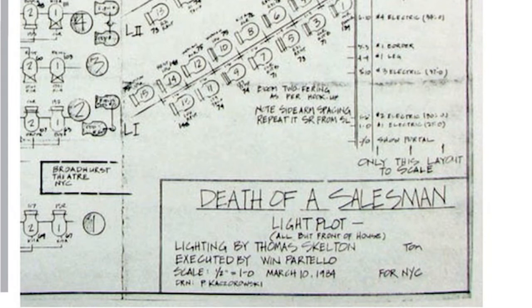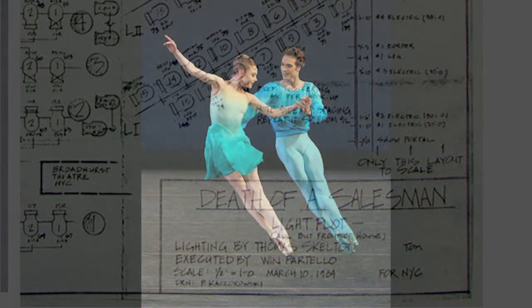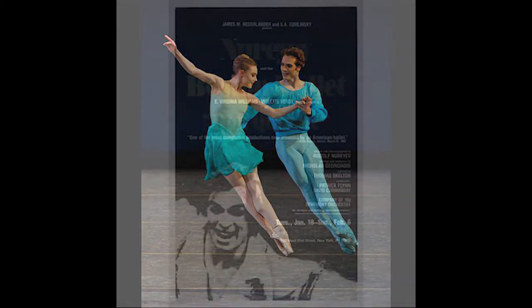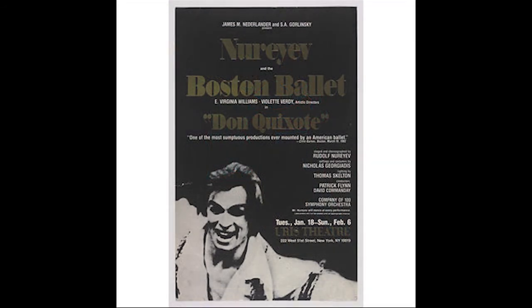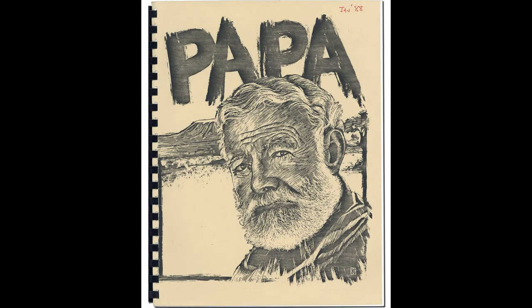Su estilo procuraba resaltar la textura de los elementos utilizados en escena, en un tiempo en el que la danza moderna se caracterizaba por representar espacios abiertos y amplios. También es recordado por el puntilloso análisis que hacía sobre cada guión para el que diseñaba. Para su diseño de Papa, un monólogo de George Pepper acerca de Ernest Hemingway, elaboró más de cinco columnas de cambios, puesto que procuró que la luz respondiera a cada estado de ánimo del personaje.